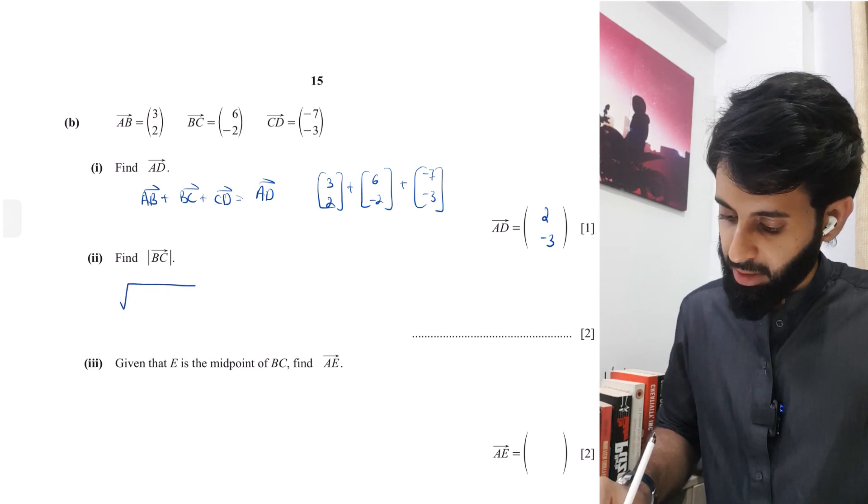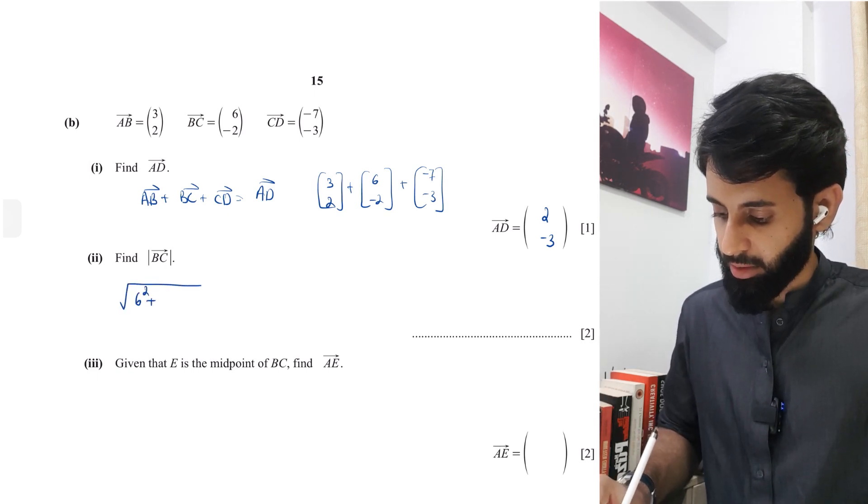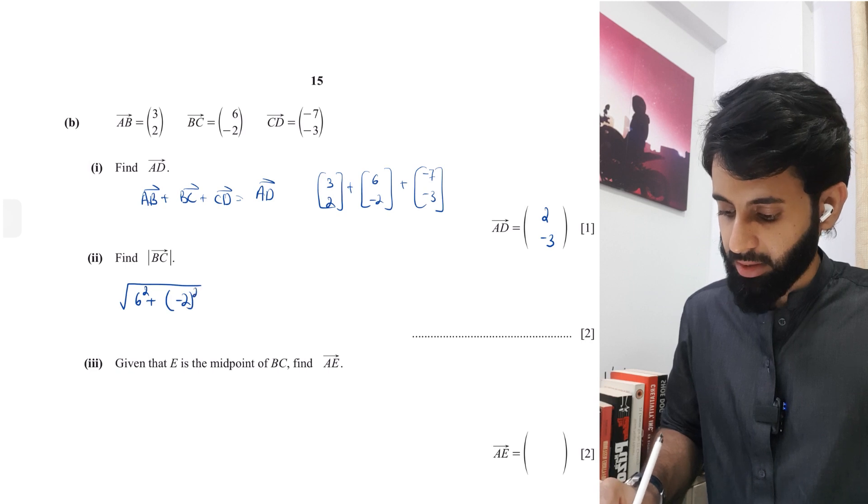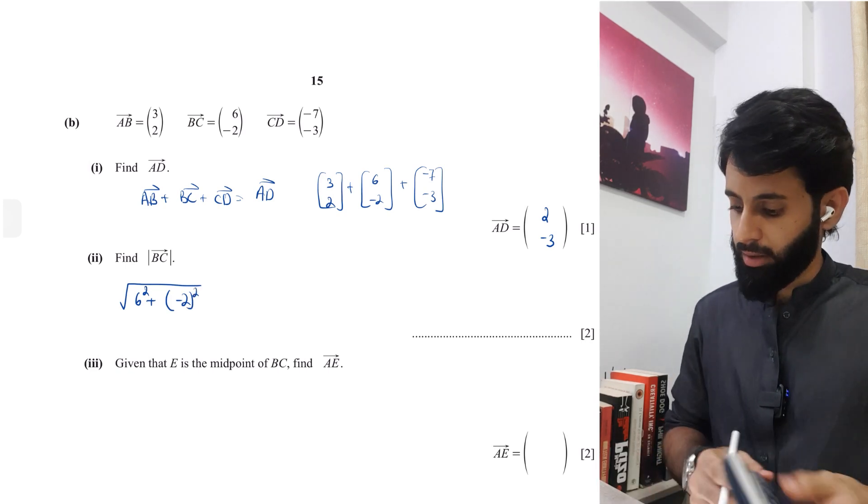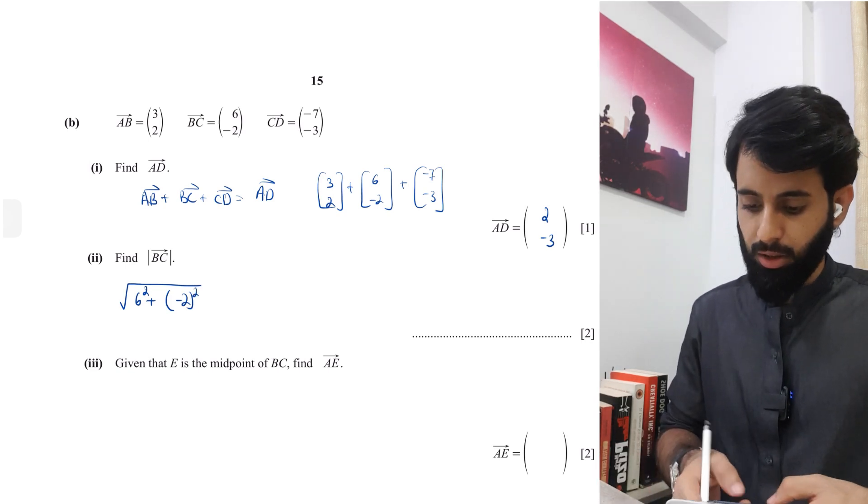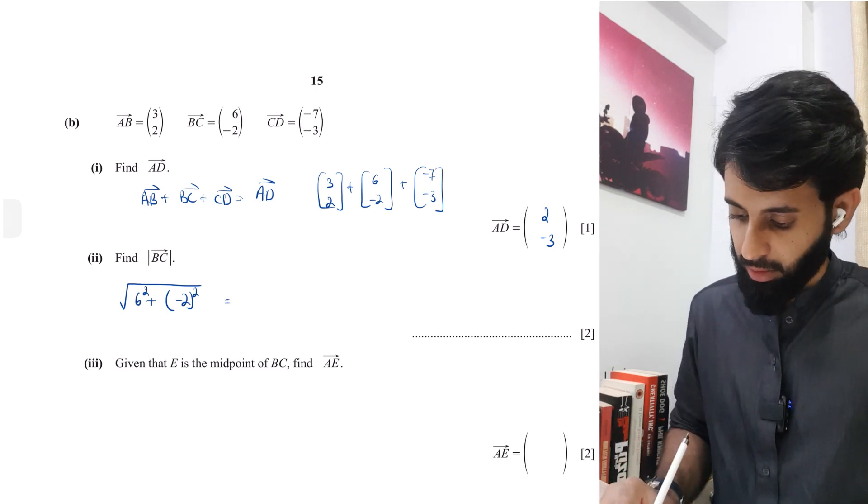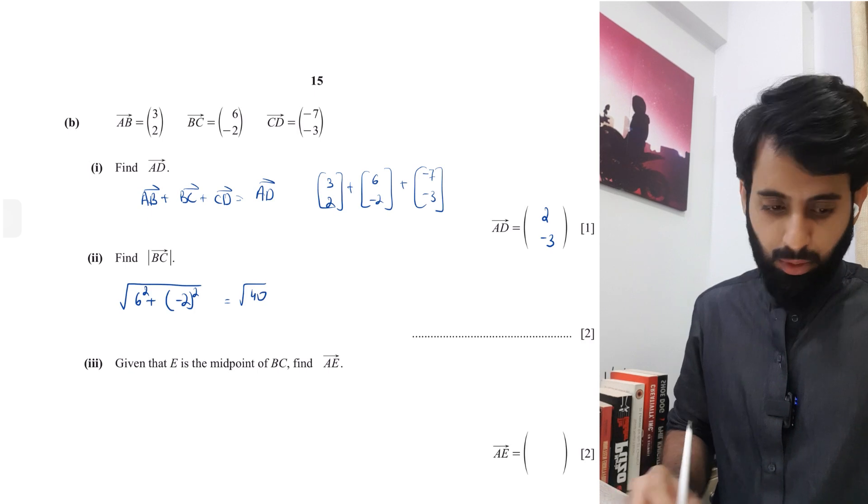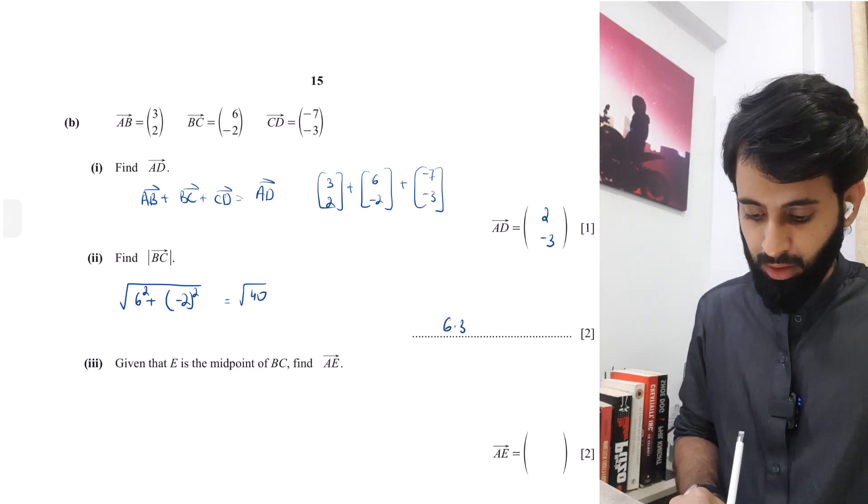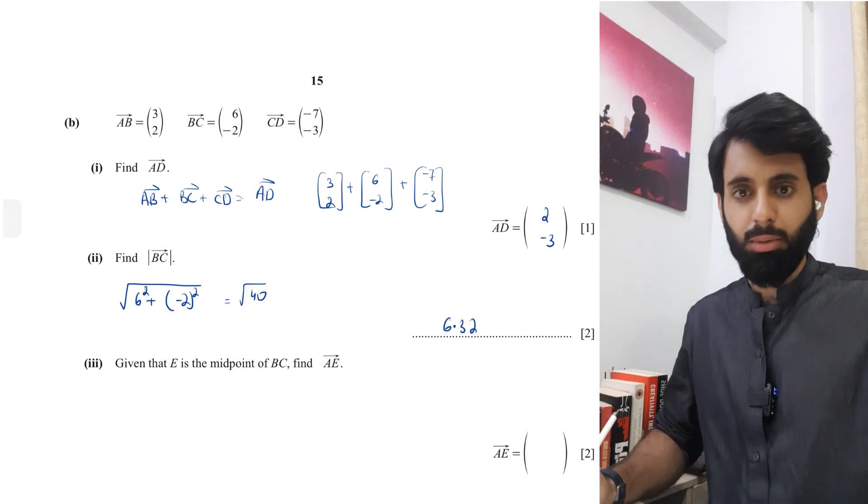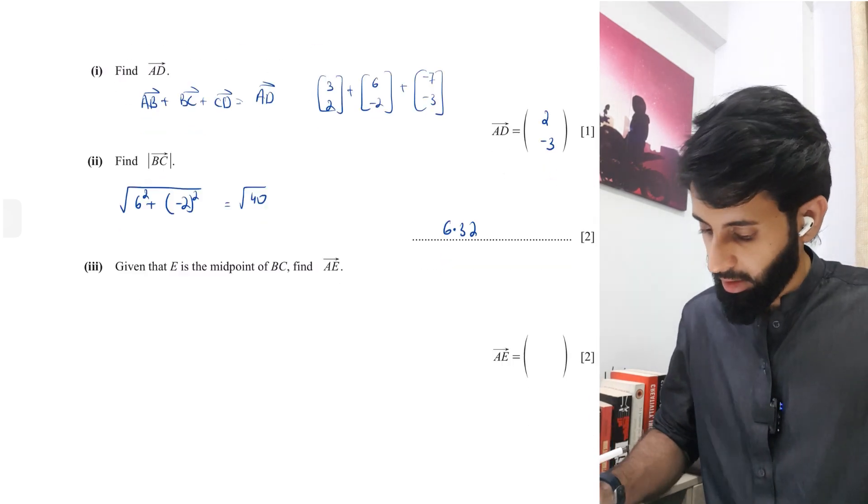Then it says find the magnitude of BC. So if you want to find the magnitude, you've got to square the X and the Y components and sum them up. So the square of six is 36, and the square of minus two is four. So 36 plus four is 40, and the square root of it is 6.32 correct to three significant figures.